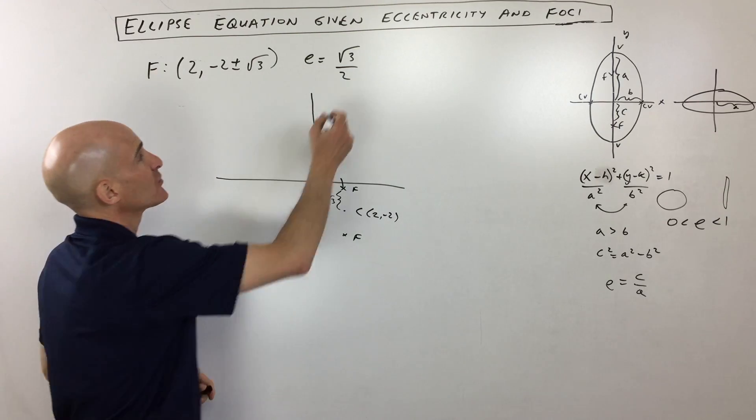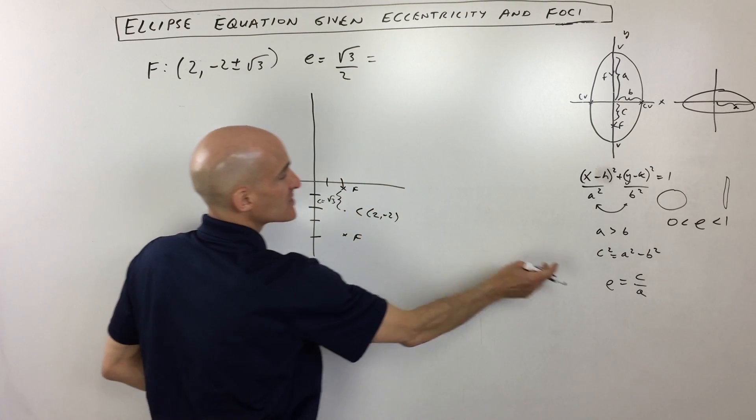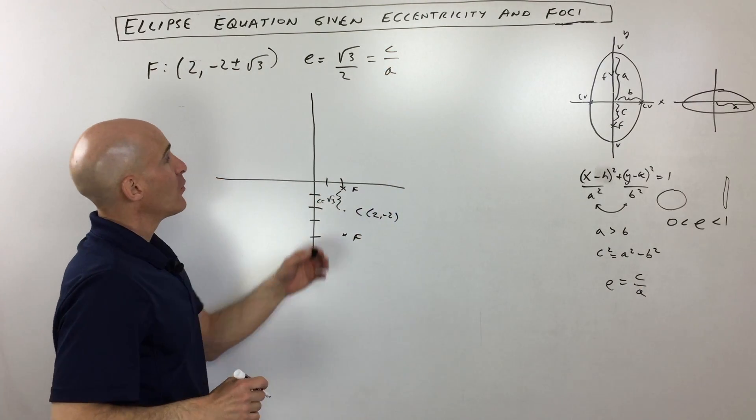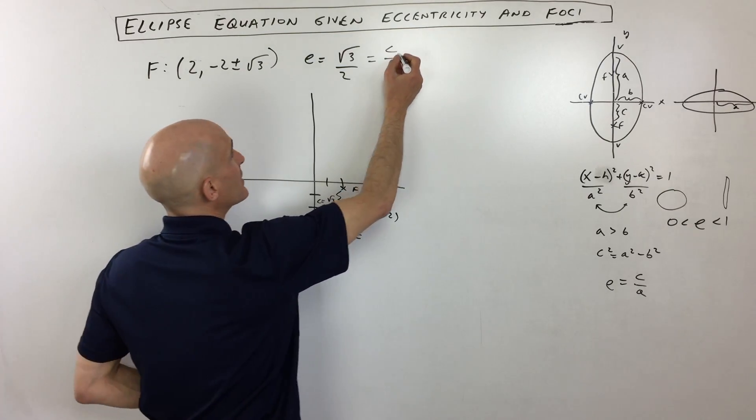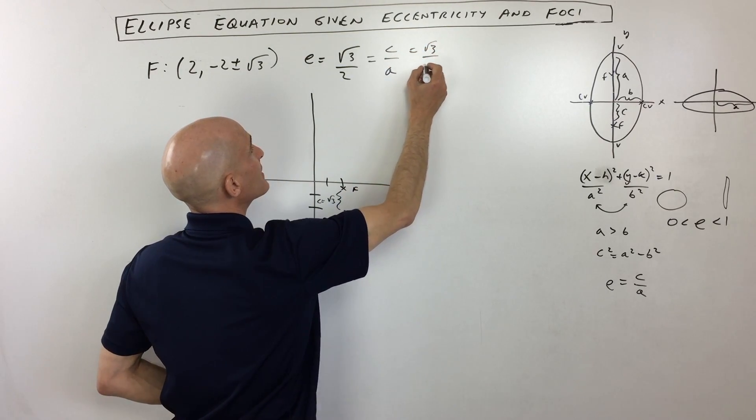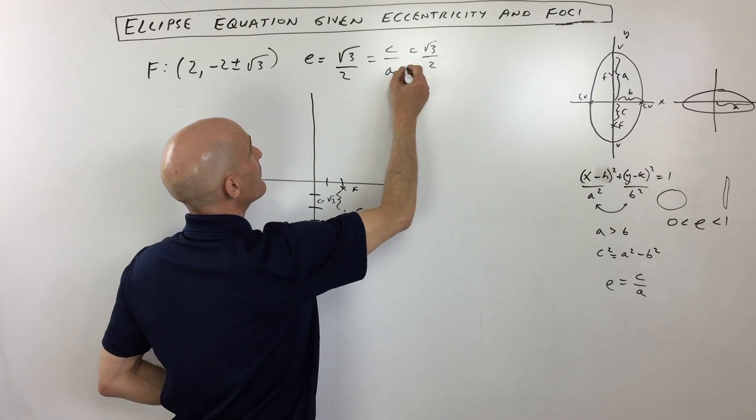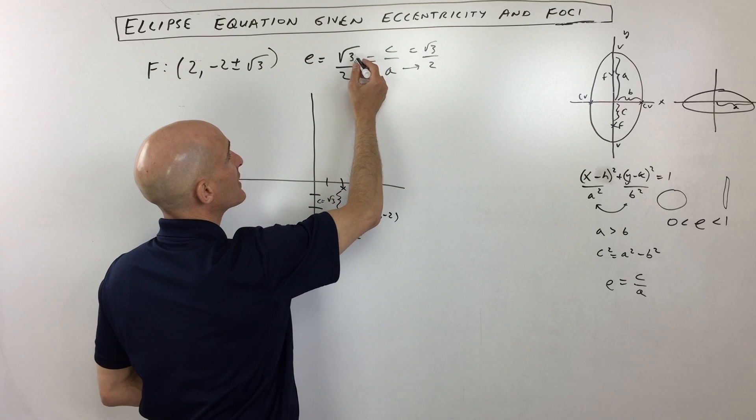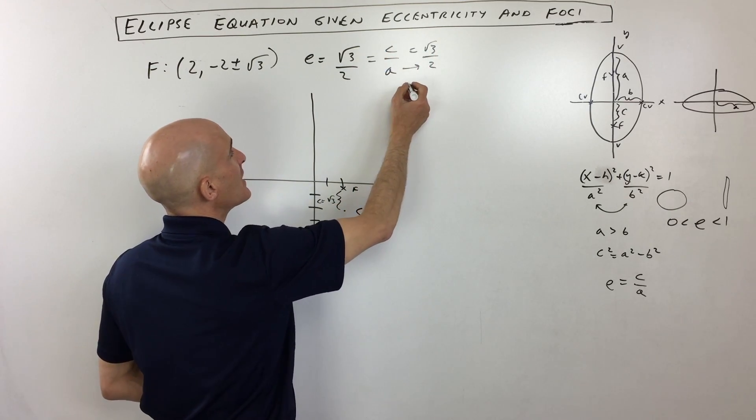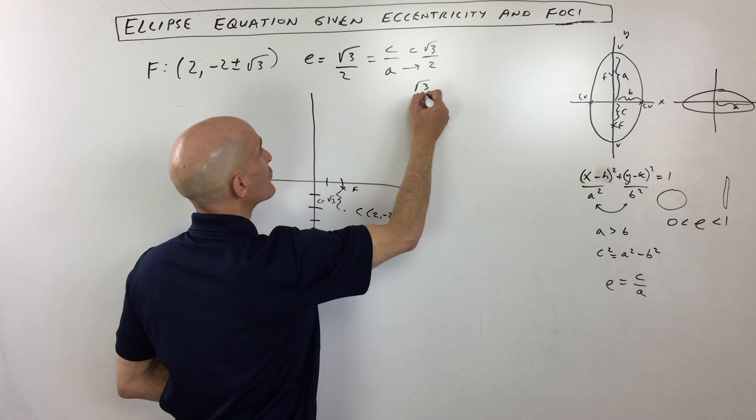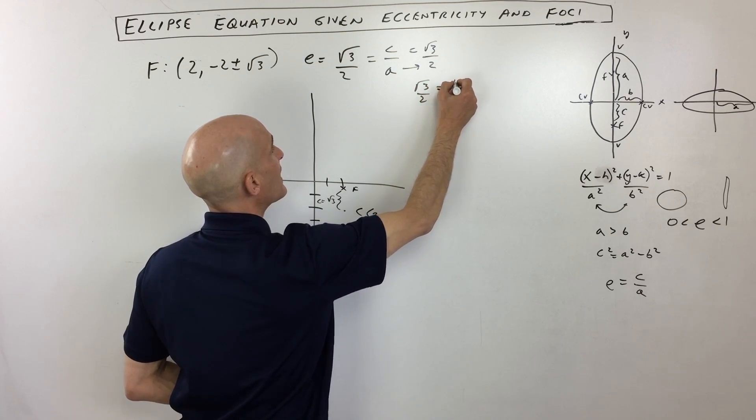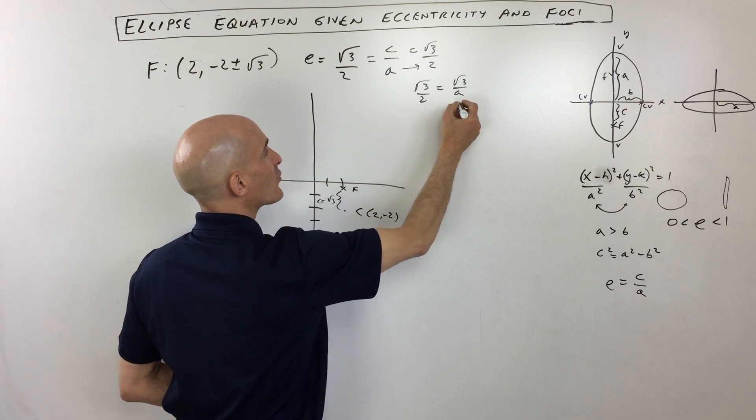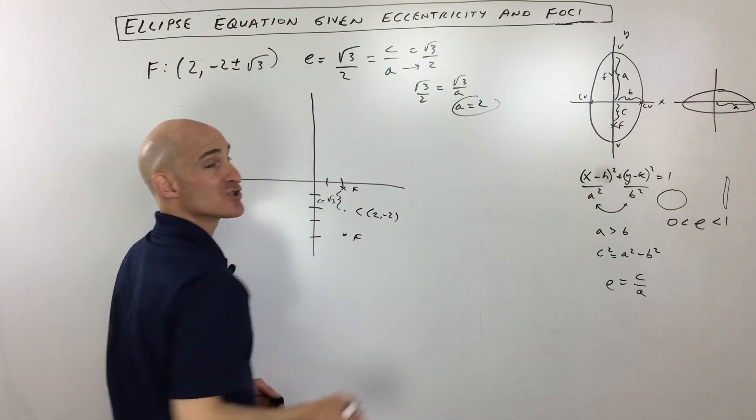Now, the eccentricity is equal to square root 3 over 2. But remember, eccentricity is C divided by A. So we have a little equation here. We already figured out that C is square root of 3. So that means that A must be equal to 2. So this was kind of an easy one as far as they kind of gave us a C value, we just had to figure out the A value. But basically, you just have square root of 3 over 2 is equal to C over A. This was square root of 3, we're solving for A. You can see that if you cross multiply, or you can just see that these are equivalent, A is equal to 2.